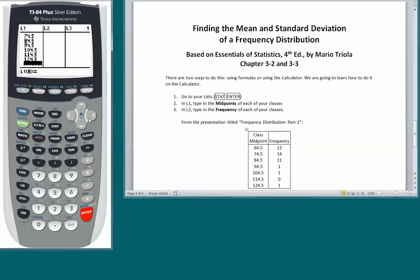Now we're going to move over to L2, which is our frequency column, and enter those numbers: 12, 14, 11, 1, 1, 0, and 1. So our entry of our midpoints and frequencies is now complete.